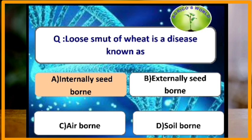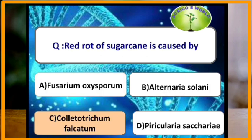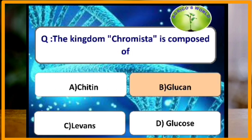Loose smut of wheat is also known as internally seed-borne disease. Red rot of sugarcane is a destructive disease caused by Colletotrichum falcatum. The kingdom Chromista has a cell wall composed of cellulose and glucans.